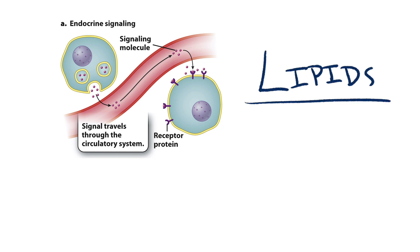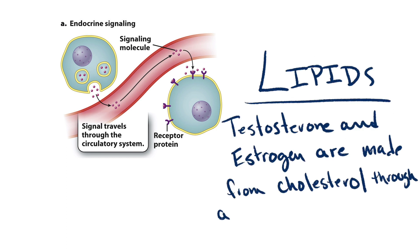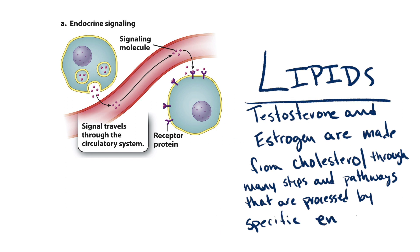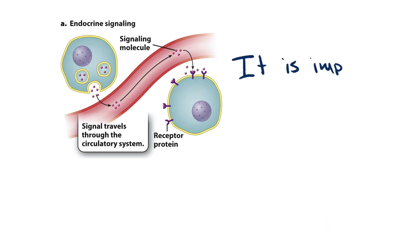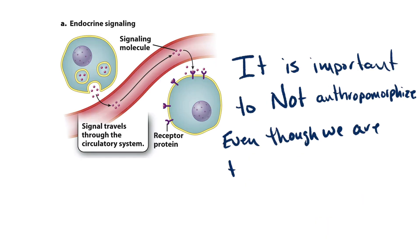Testosterone and estrogen are made from cholesterol through many steps and pathways, each governed by a specific enzyme. If you look at this picture, each arrow represents a specific enzyme, and estrogen and testosterone are highlighted in yellow, as well as our starting point of cholesterol. It's important not to anthropomorphize even though we're talking about human cells.